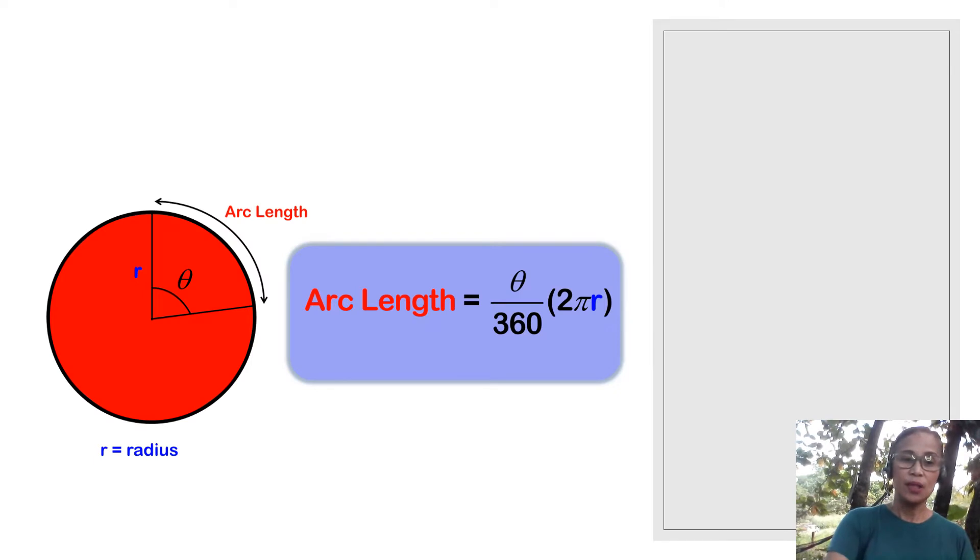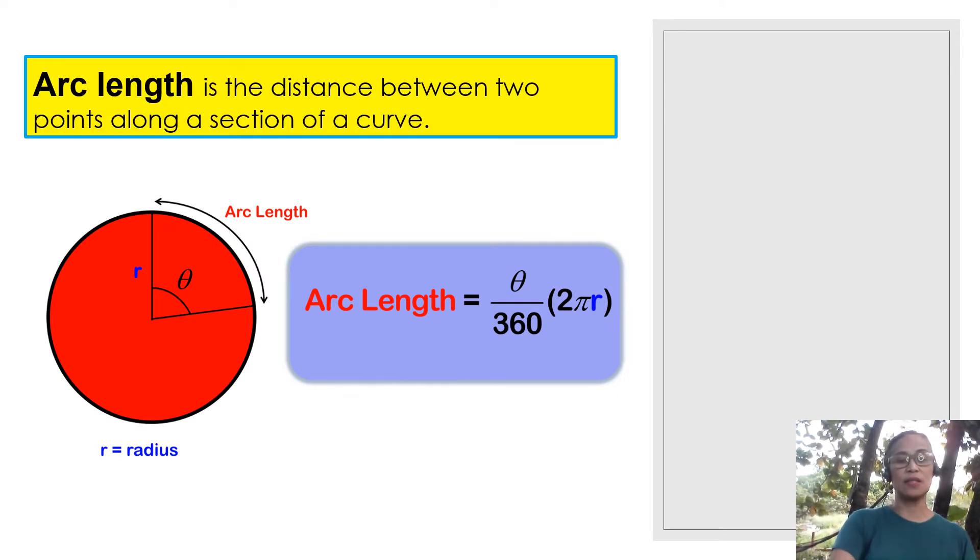So to give you more precise example, an arc length is the distance between two points along a section of a curve of the circle. So if I'm going to put point A here at the end point of the intercepted arc and point B on the other end point, we have now arc AB. And if we are going to flatten arc AB, it will form into a segment. And that becomes segment AB.